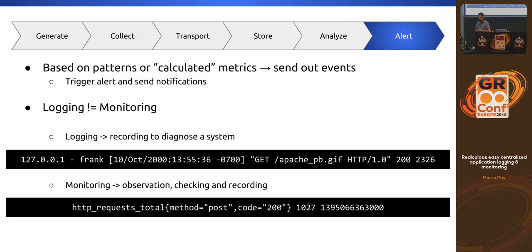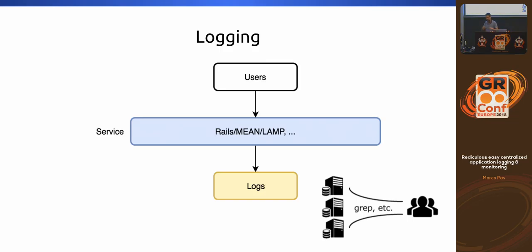At a certain point it's also nice to get alerts on specific events — for example, if a message appears multiple times in a certain time frame, so you get an alert that something strange is happening. Or if you get no log information at all, the service may be gone. You can get alerting from these systems. What I'd like to mention is that logging is something different from monitoring. Logging is what has happened to the system; monitoring covers aspects like how much CPU am I using. Those are two different aspects of an application.